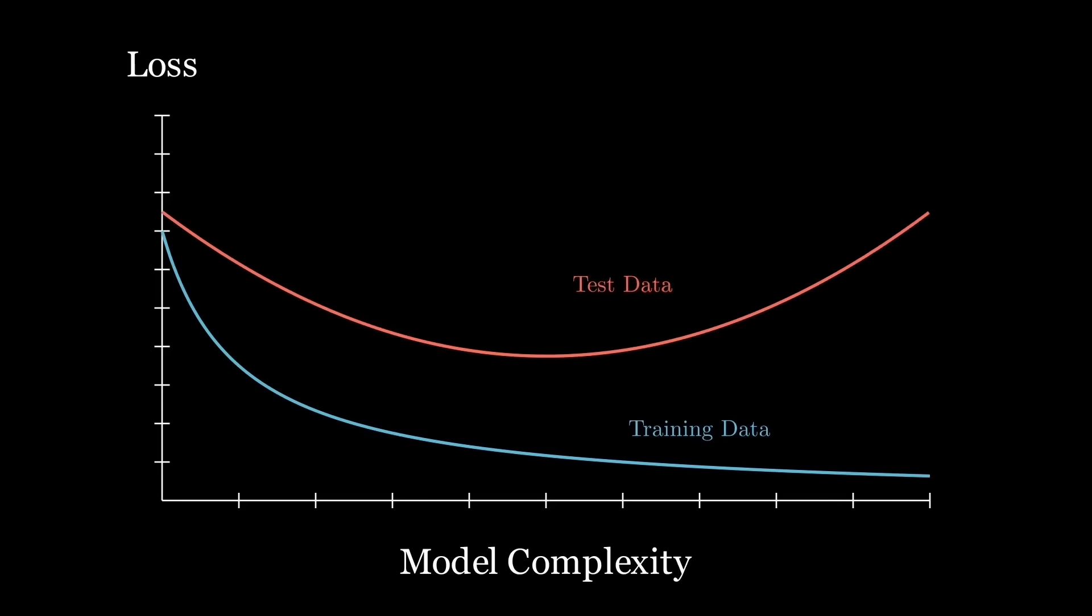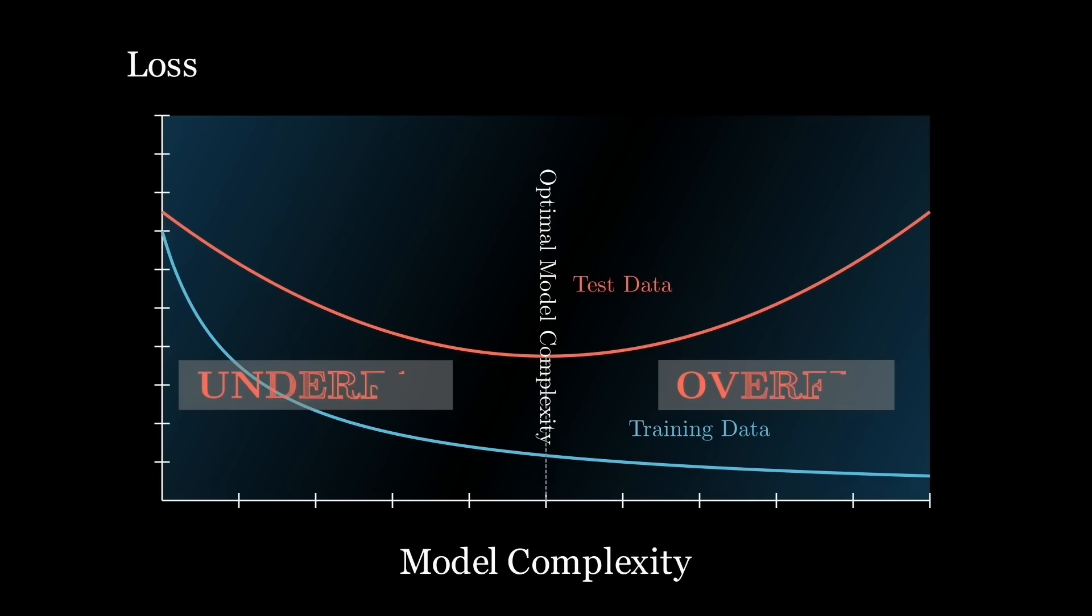This phenomenon is overfitting. As the model increases in complexity, it aligns more closely with the historical data. However, when the complexity surpasses a certain point, it becomes counterproductive.